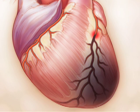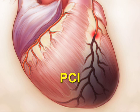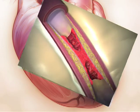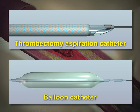Early reperfusion by means of primary percutaneous coronary intervention, or PCI, has reduced mortality from acute myocardial infarction to less than 5%. A new PCI technique uses a thrombectomy aspiration catheter, in contrast to the traditional technique which uses a balloon catheter to open the artery.